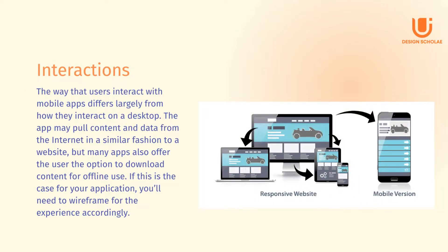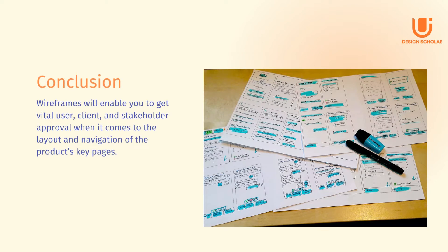Interactions: the way that users interact with mobile apps differs largely from how they interact with the desktop. The swipe right or left interaction, for example, is particular to mobile. This technique can be used on a mobile app when there are multiple image options — showing the edges of other images to the right and left hints that you can swipe horizontally. This kind of interaction is less common on a website, as users tend to scroll up and down using the mouse. So there we have it — everything you need to know about wireframes. They may seem basic enough to be overlooked, but wireframes will enable you to get vital user, client, and stakeholder approval when it comes to the layout and navigation of the product's key pages.